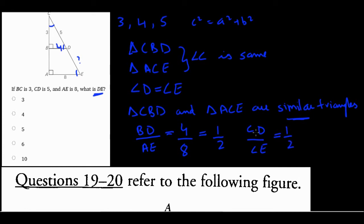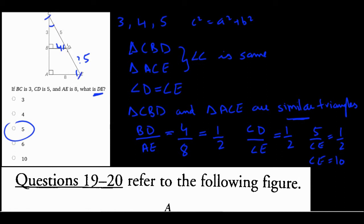Since the triangles are similar, I know CD is 5 and the ratio is one half. So 5 over CE equals one half, meaning CE equals 10. Then DE has to be 5 as well, because CE is 10 and CD is 5. So DE equals 5. This is one of the harder questions — similar triangles don't occur that often on the GRE, but it's good to know. When all three angles of two triangles are equal, they are similar, and the ratio of any corresponding sides must be equal.